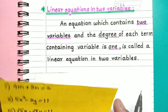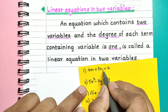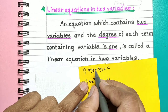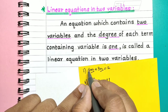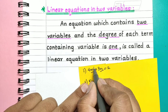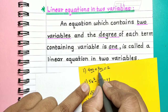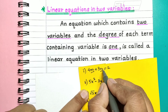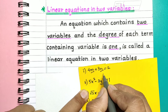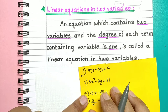Consider one example: the equation 4m plus 3n is equal to 2. We see that there are two variables m and n. The term containing m has degree 1 since the power of m is 1. Similarly, in the term containing n, the power of n is 1, so the degree of that term is also 1. Therefore this equation is a linear equation in two variables.